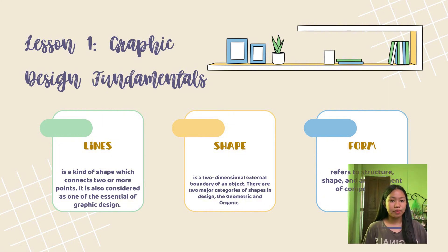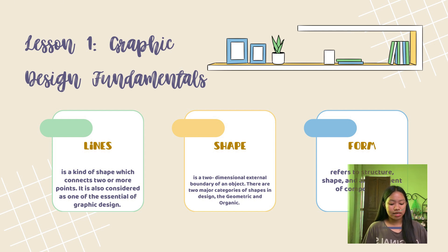Next is Shape. Shape is a two-dimensional external boundary of an object. Any object outline that has height and width can be considered a shape. There are two major categories of shape: first, Geometric — these are regular and mathematical shapes; and Organic — these are free-form shapes.